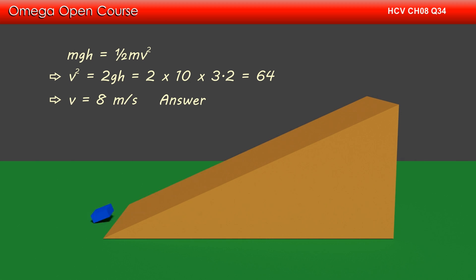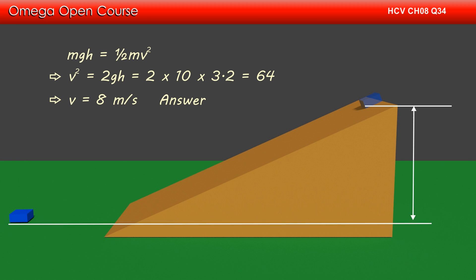When the block slides down the incline, the vertical displacement still is h, and the work done by gravity is still mgh. Therefore, the kinetic energy and hence the speed in this case will remain the same as in the previous case. Therefore, the answer to part D is 8 meters per second.